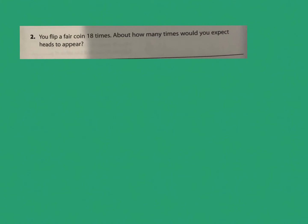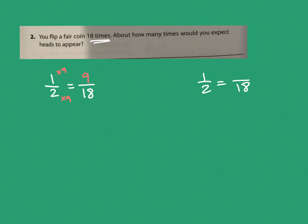Let's look at another example: flipping a fair coin 18 times — about how many times would we expect heads to appear? For one flip, there are two possibilities — heads or tails — and one of those is heads, so it's one out of two. But we're flipping it 18 times. Two times what equals 18? Two times nine. Do the same to the numerator: nine out of 18 is the theoretical probability that heads will show up.